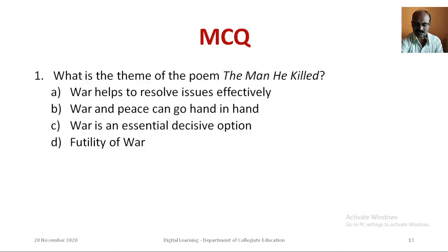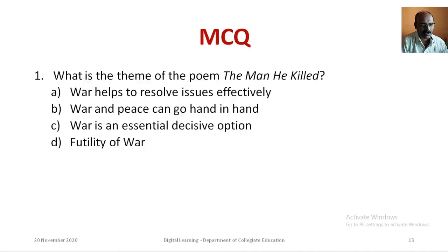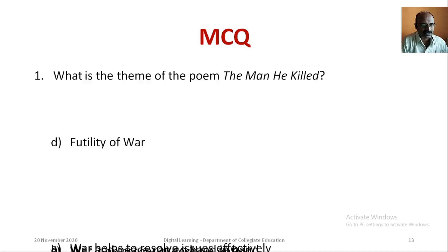Now let me check your understanding. I will ask a few multiple choice questions — try to answer them. Question 1: What is the theme of the poem 'The Man He Killed'? Option A: War helps to resolve issues effectively. Option B: War and peace can go hand in hand. Option C: War is an essential decisive option. Option D: Futility of war. The correct answer is Option D: Futility of war.